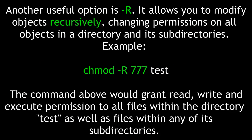Another useful option is the dash capital R flag, which allows you to modify objects recursively — changing permissions on all objects in a directory and its subdirectories. For example, chmod -R 777 test would grant read, write, and execute permission to all files within the directory test, as well as all files within any of its subdirectories.